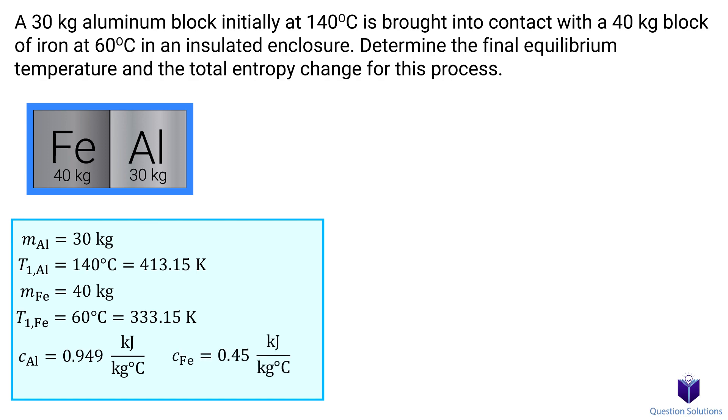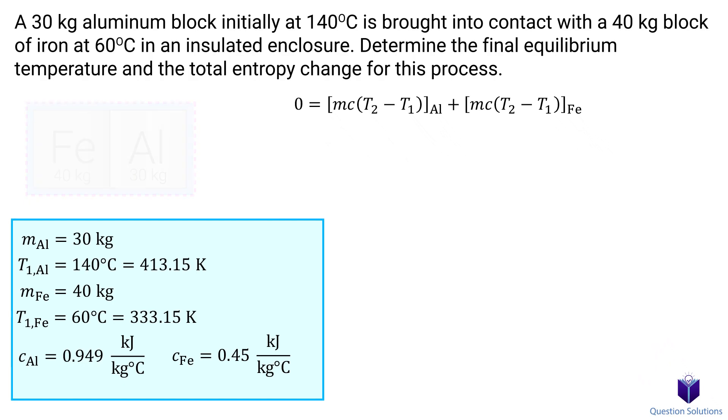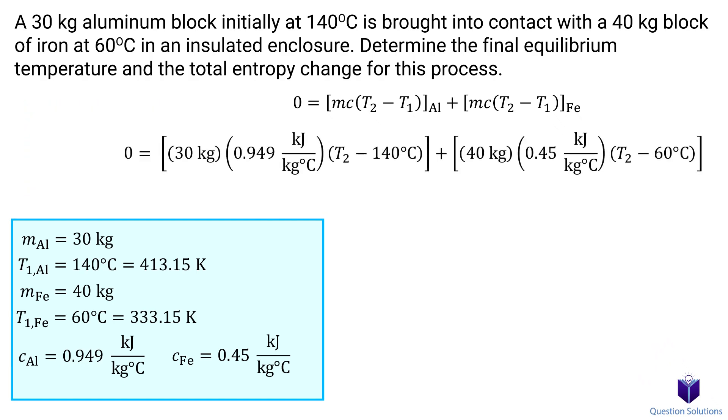Taking both blocks in our insulated enclosure to be our system, our energy balance equation is simply energy in minus energy out equals the change in energy of the system. The only change here would be internal energy. So we can write that like this. Going one step further, we can break down the internal energy into mass, specific heat and temperature. Let's plug our values in and solve for the equilibrium temperature.